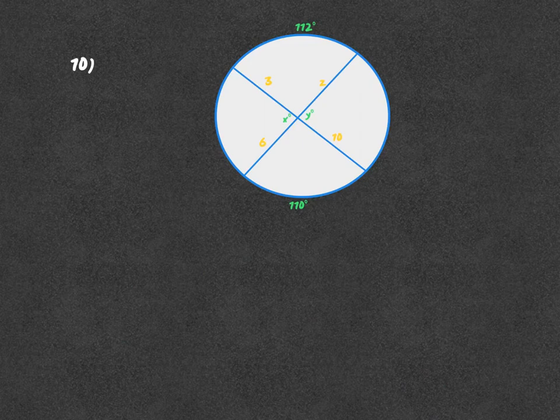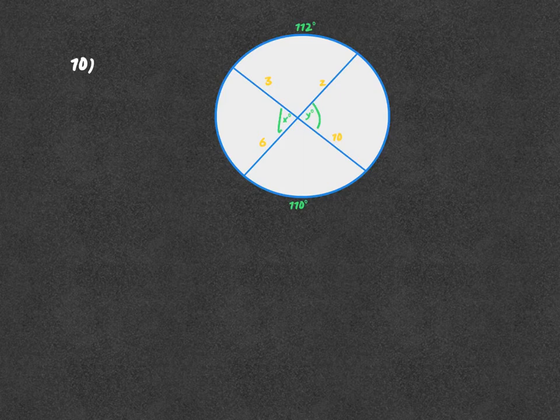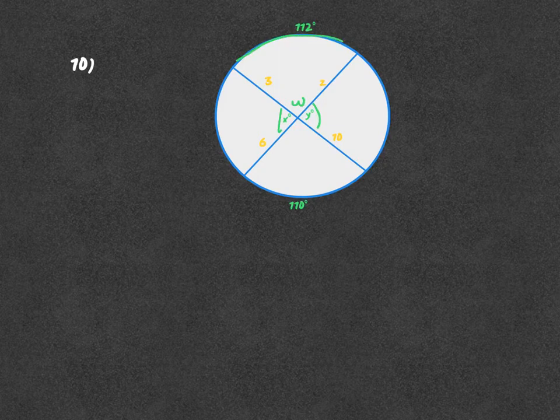For this next example, I'm going to start by finding X and Y. They're going to be the same because we have vertical angles here and here. So I'm going to find, let's just call it W right there, using my intercepted arcs of 112 and 110.